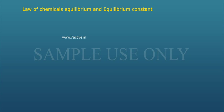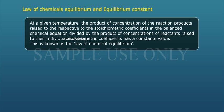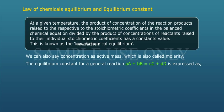Law of chemical equilibrium and equilibrium constant. At a given temperature, the product of concentrations of the reaction products raised to their respective stoichiometric coefficients in the balanced chemical equation, divided by the product of concentrations of reactants raised to their individual stoichiometric coefficients, has a constant value. This is known as the law of chemical equilibrium. Concentration is also referred to as active mass, which is also called molarity.